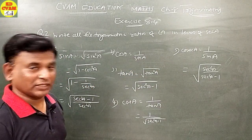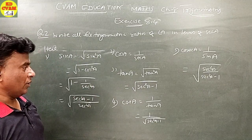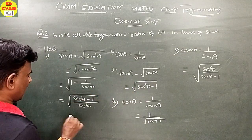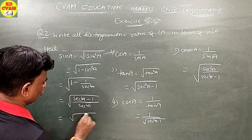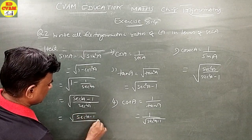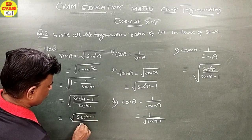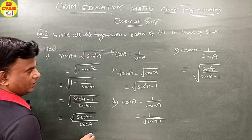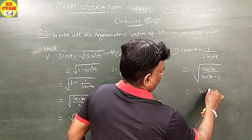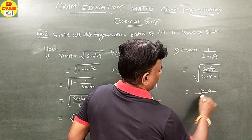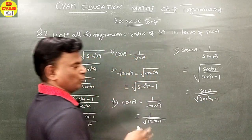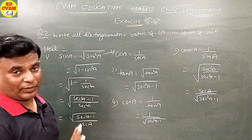Question number 3: Evaluate. We already covered this type of problem in Exercise 8.3. For part one: sin squared 63 plus sin squared 27 over cos squared 17 plus cos squared 73. Write 63 as 90 minus 27 and 17 as 90 minus 73, applying the complementary angle formula. Both forms of writing the answer are right.